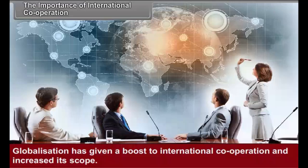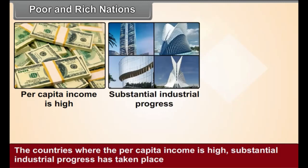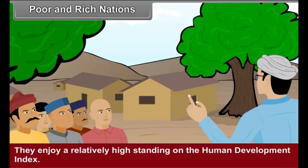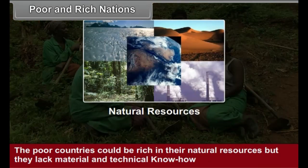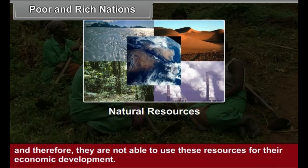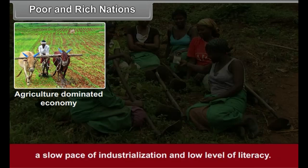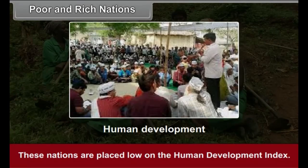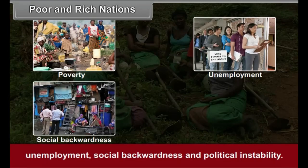Globalization has given a boost to international cooperation and increased its scope. The countries where the per capita income is high, substantial industrial progress has taken place, and where the level of literacy is also high, are known as rich nations. They enjoy a relatively high standing on the Human Development Index. The poor countries could be rich in their natural resources, but they lack material and technical know-how and therefore are not able to use these resources for their economic development. The poor nations have an agriculture-dominated economy, a slow pace of industrialization, and a low level of literacy. These nations are placed low on the Human Development Index. They also have to take special efforts to solve the problems of poverty, unemployment, social backwardness, and political instability.